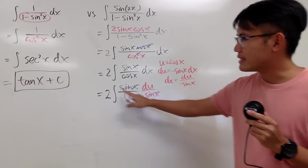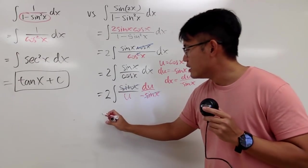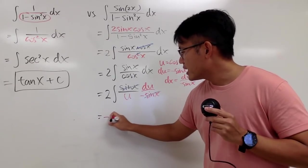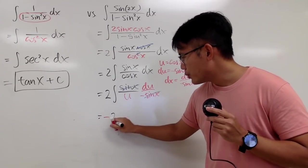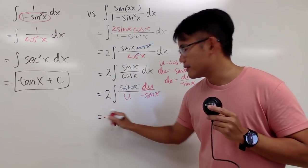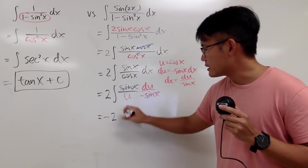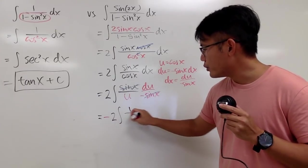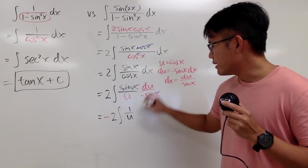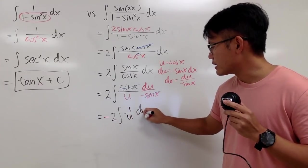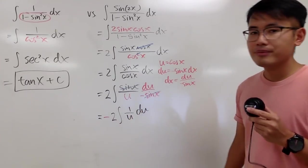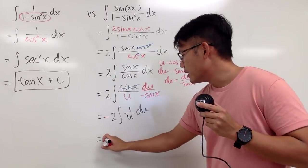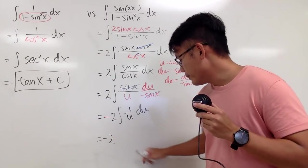Let me just bring that negative to the front. So we have negative 2. And this integral is the integral of 1 over u in the u-world.